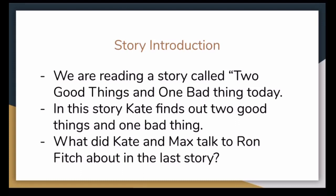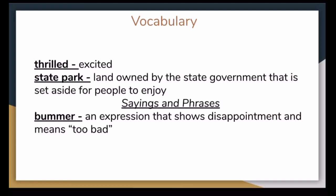Story introduction. Today, we're reading the story called Two Good Things and One Bad Thing. In this story, Kate finds out two good things and one bad thing. What did Kate and Max talk to Ron Fitch about in the last story? Right. The bone they found. Let's look at the vocabulary. Thrilled means excited. For example, I was thrilled to get a new bike.